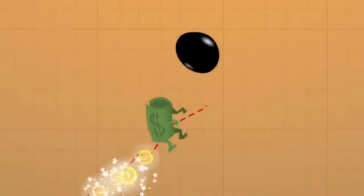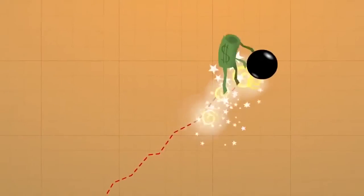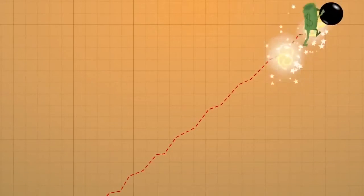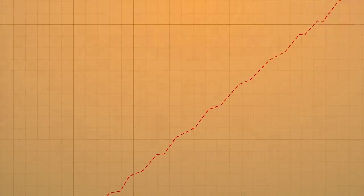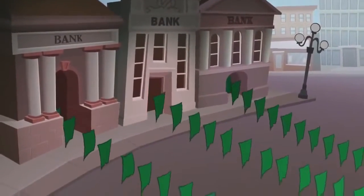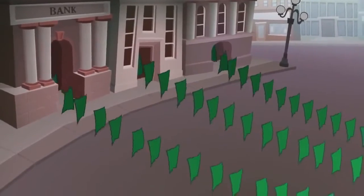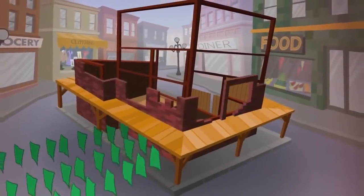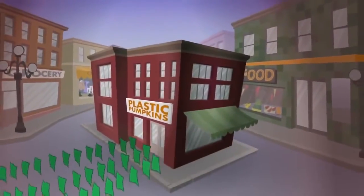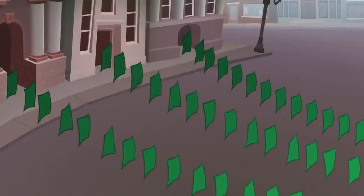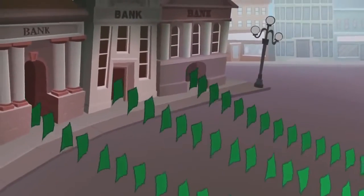The financial system is built on the assumption of growth, which requires an increasing supply of energy to support it. Banks lend money they don't have, in effect creating it. The borrowers use the newly created loan money to grow their businesses and pay back the debt with an interest payment, which requires more growth.